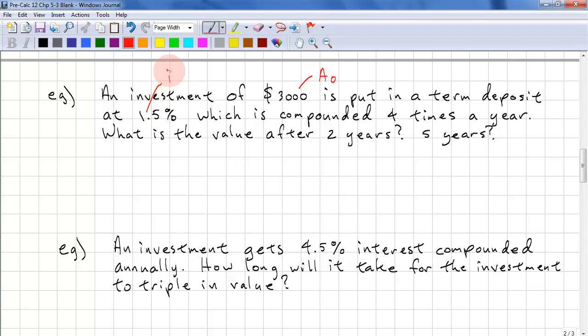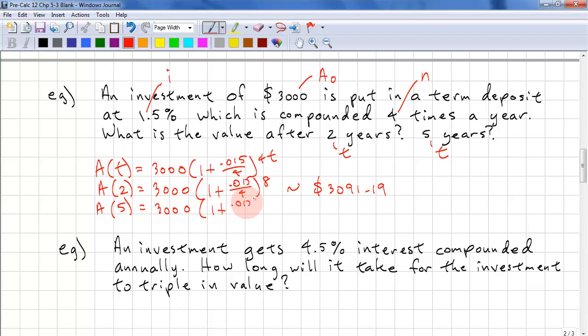What is the value after two years? And what is the value after five years? So here we have our initial amount, A naught. Here we have our interest rate, i. And here we have our compounding, which is n. And we have two values for t that we need to compute. Now we substitute the values into our formula. We have A of t equals 3000 times 1 plus 0.015 over 4 raised to the power of 4t. Now we compute the values that we want, A of 2. And 4 times 2 is 8. We put that into the calculator. We get an approximate value of $3,091.19. After five years, 4 times 5 is 20. And we get an approximate value of $3,233.20.